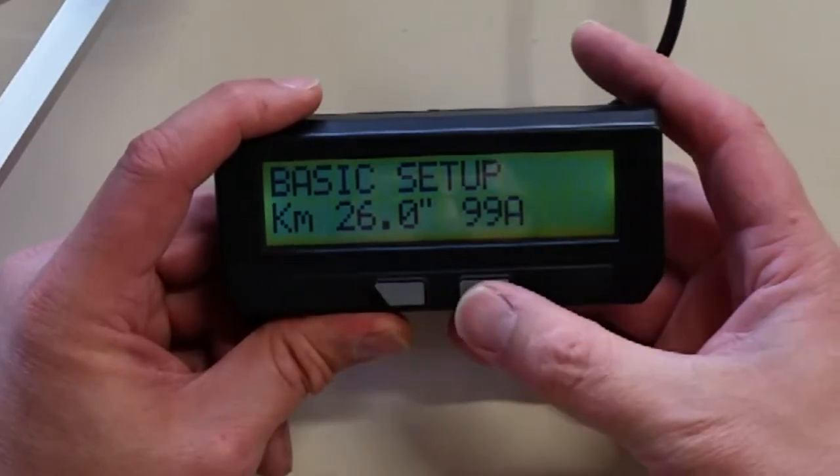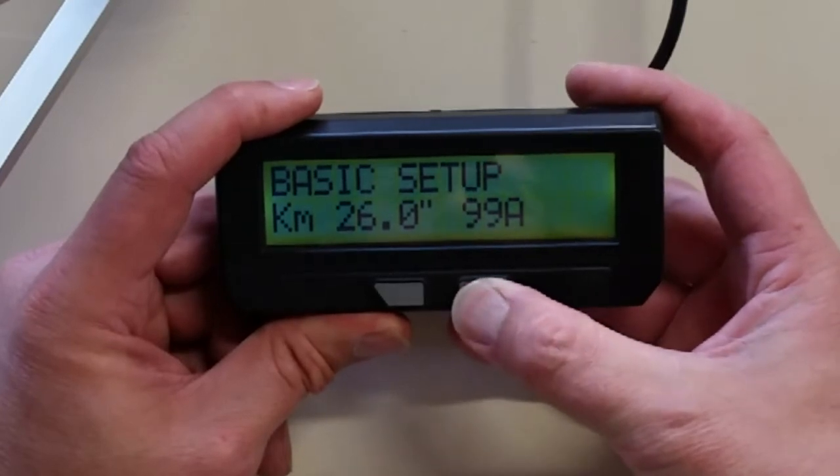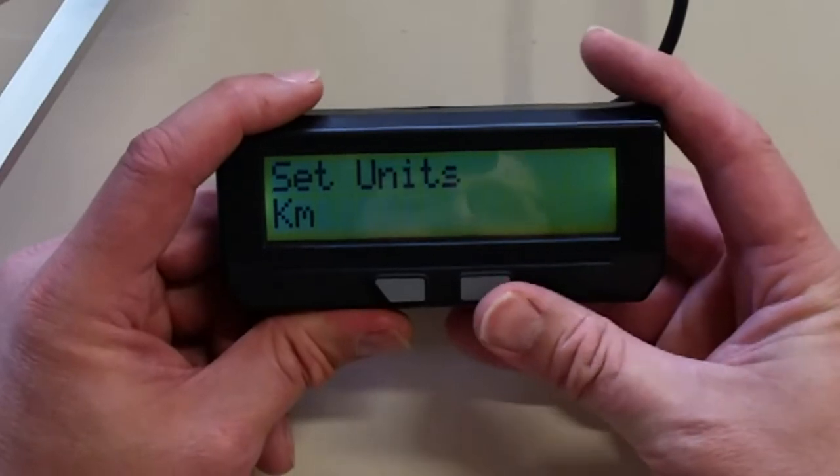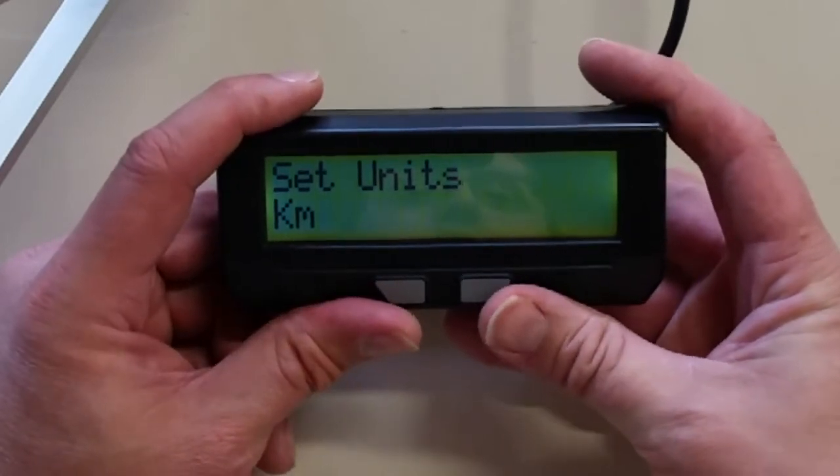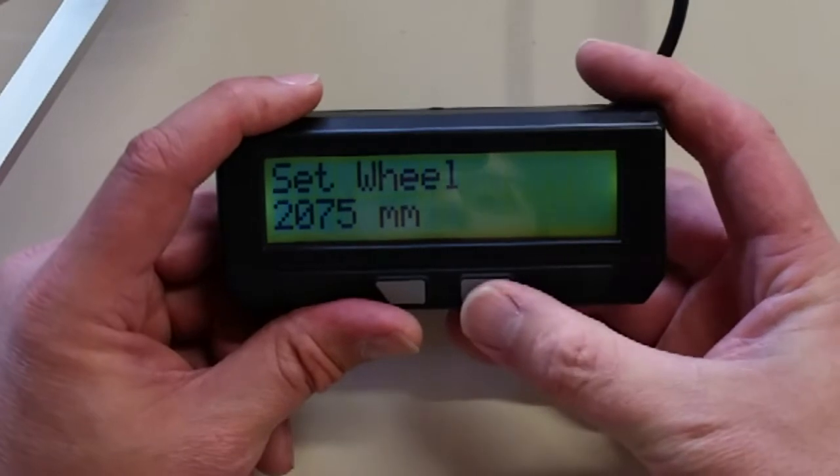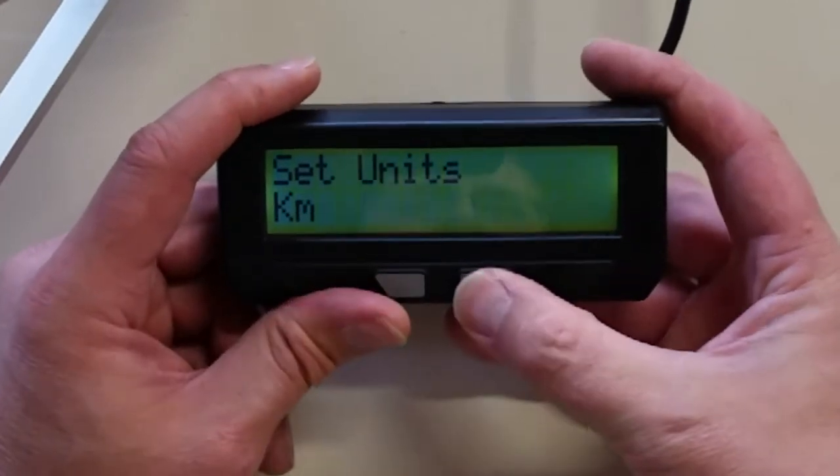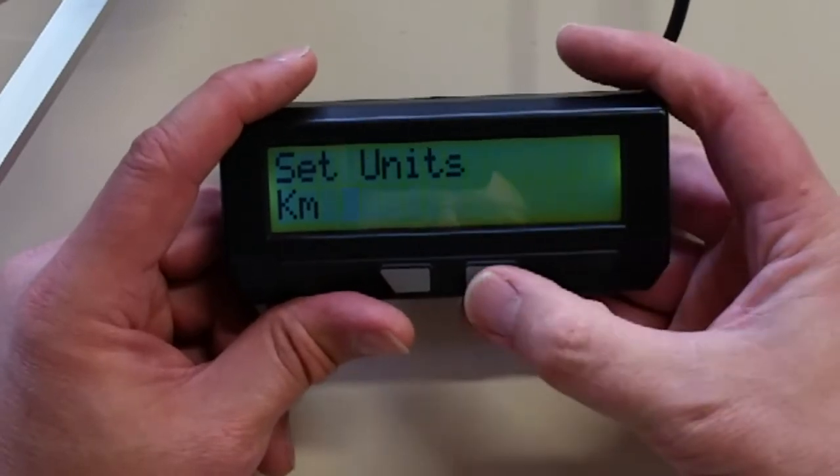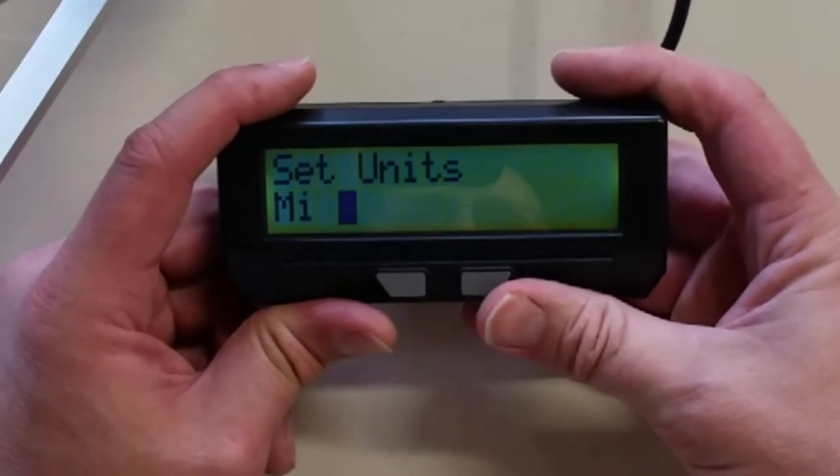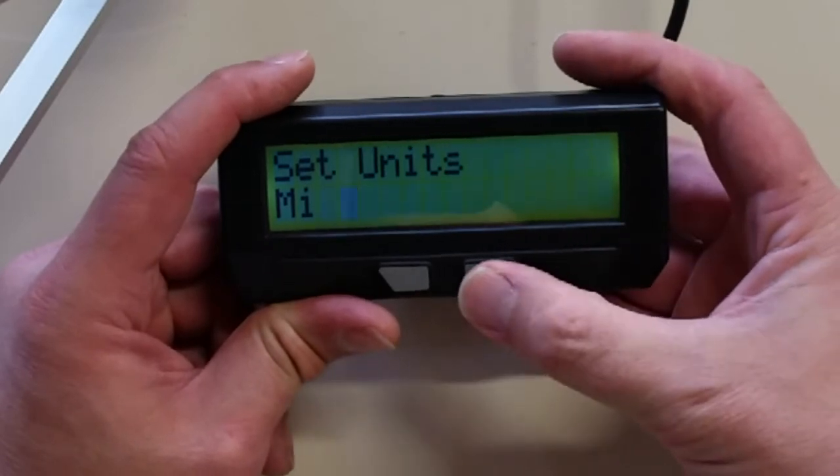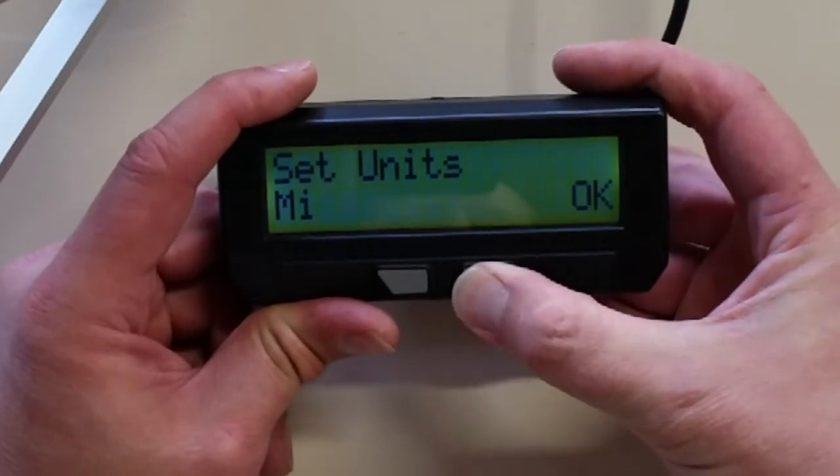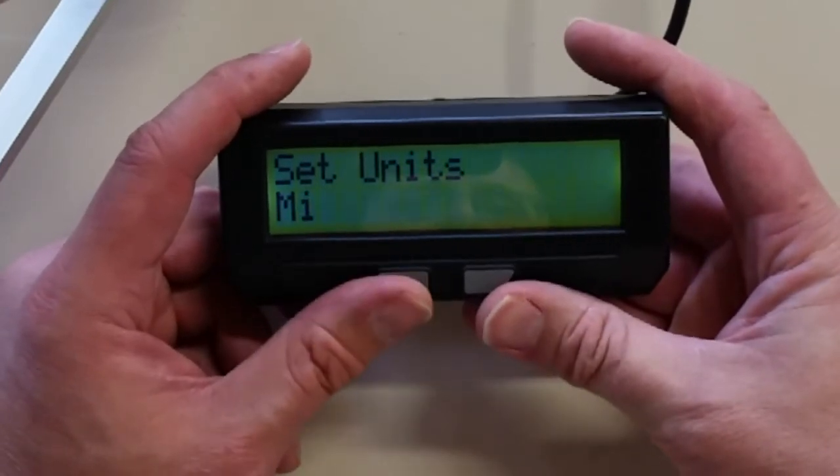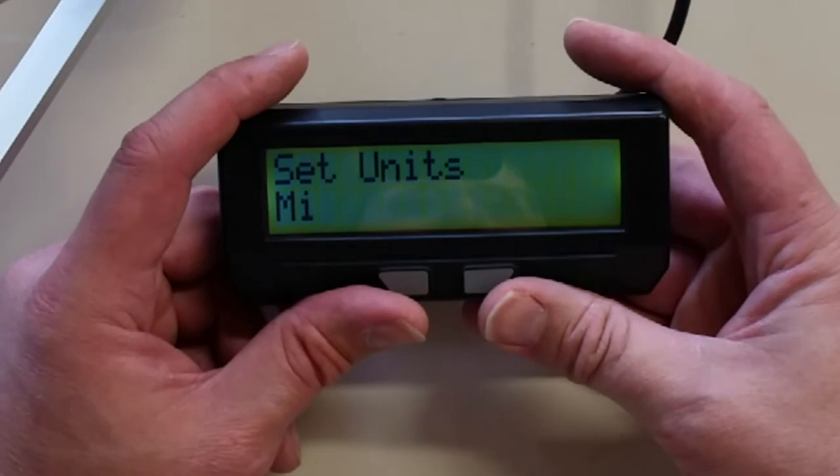So let's go ahead and program that. To enter that menu we will press and hold the right button. And we are going to set the units first. If you want kilometers you can leave it there. If you want miles per hour, we will go into that mode, press and hold the right button again and then just press the right button once. We will change to miles, press and hold to go back to the main menu.